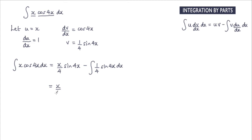So we have x over 4 sine 4x minus. Now the integral of this, well we could actually place this quarter, that could be outside the integral. So we can just ignore that for the time being.